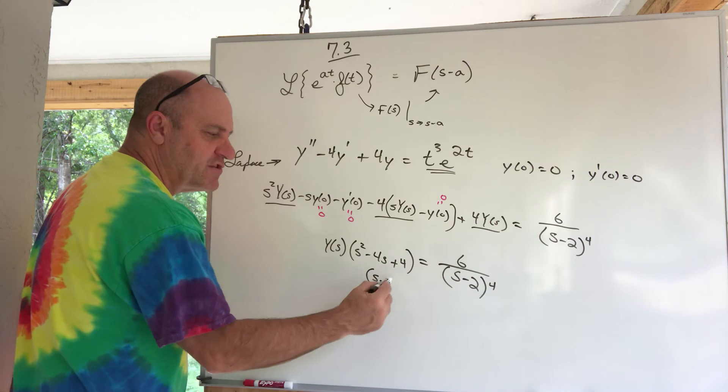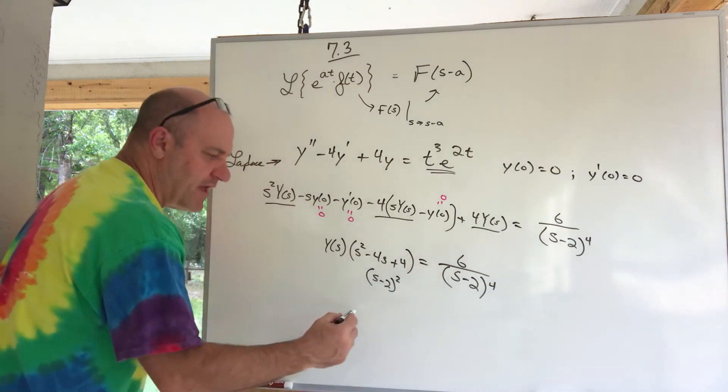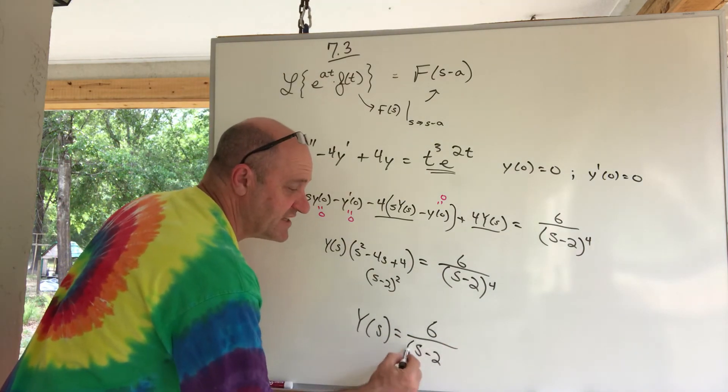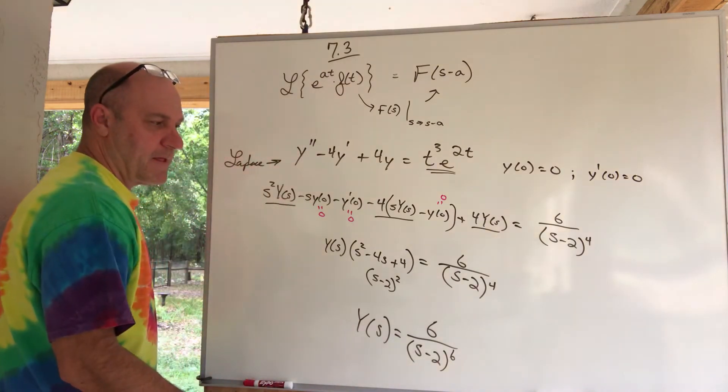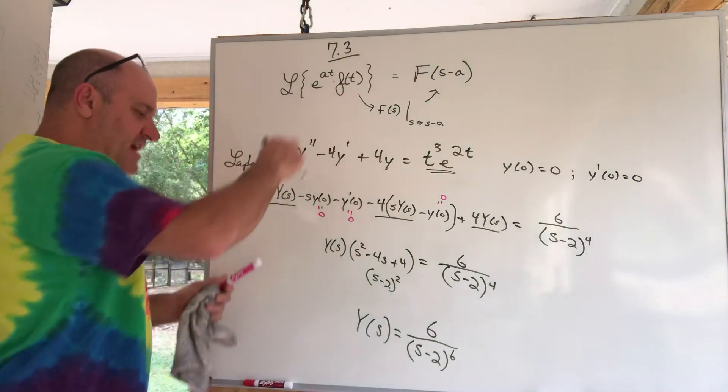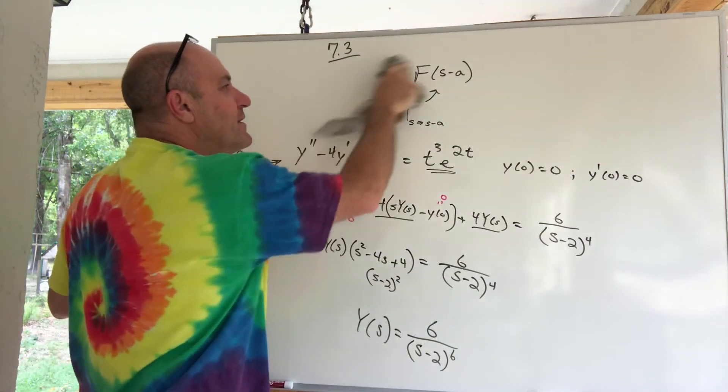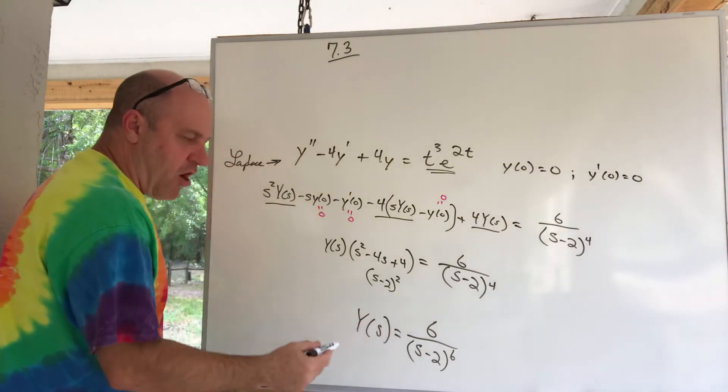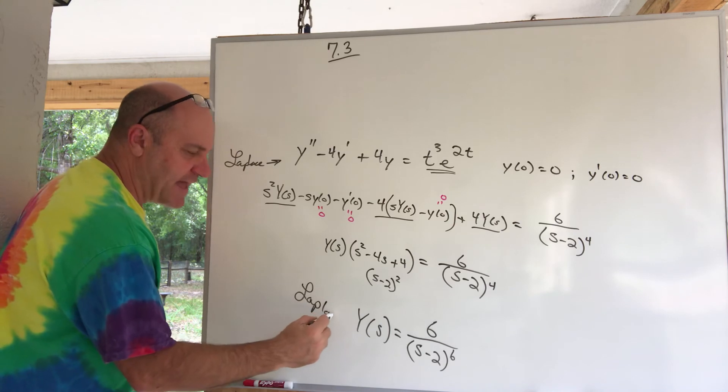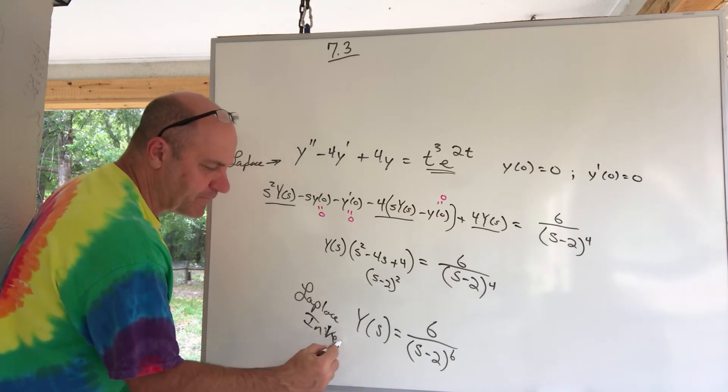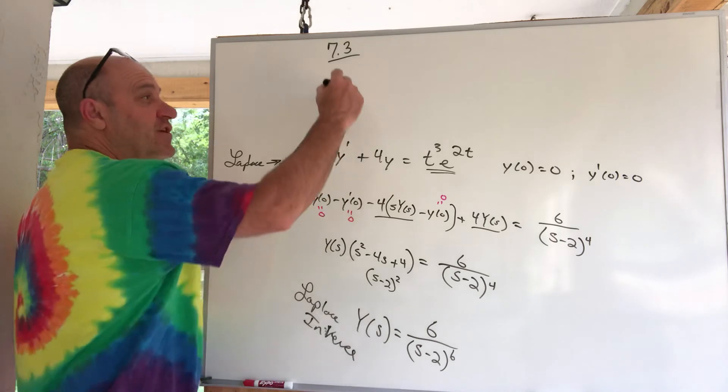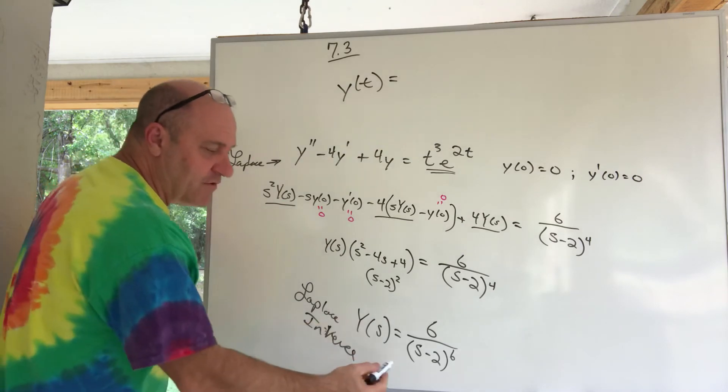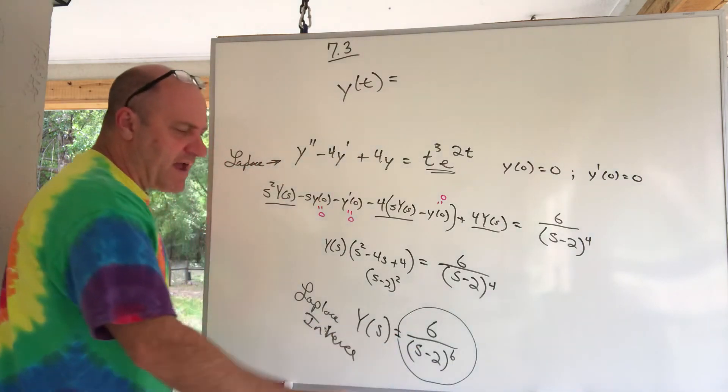And I'm going to jump all the way to the top of the board, if you don't mind. Here, I'm going to erase my rule here. Maybe you remember the next step. You get big Y of s all by itself. Then you Laplace inverse both sides. And when you Laplace inverse the big Y of s, you get little y of t, which is the solution to the differential equation we're looking for. But all I've got to do now is Laplace inverse this. And so we practiced a little bit of that today.